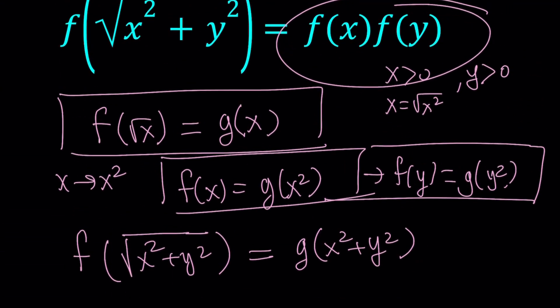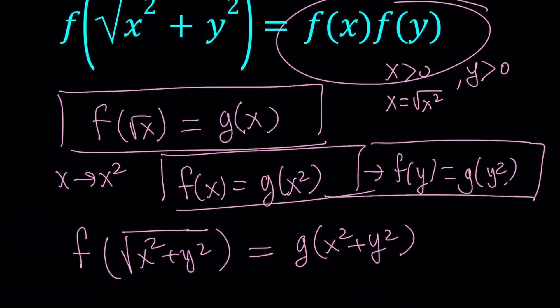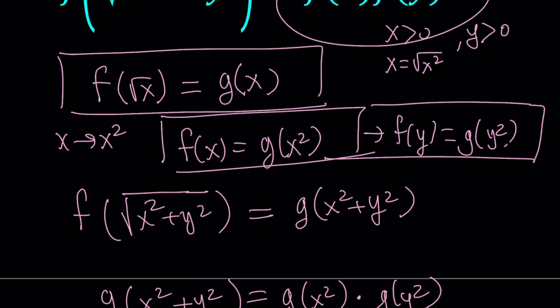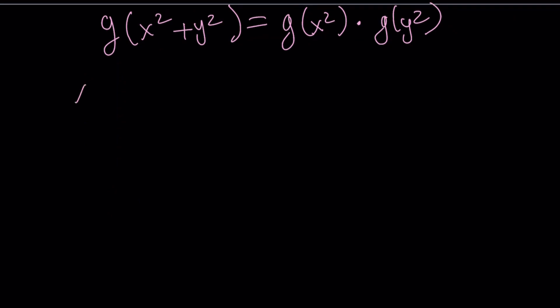I'm going to set x squared equal to another variable and y squared equal to another variable. So let's go ahead and replace x squared with z and y squared with w. So we get g of z plus w equals g of z times g of w.